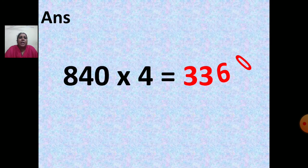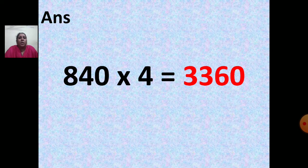840 multiplied by 4 is equal to 3,360. Very good, children.